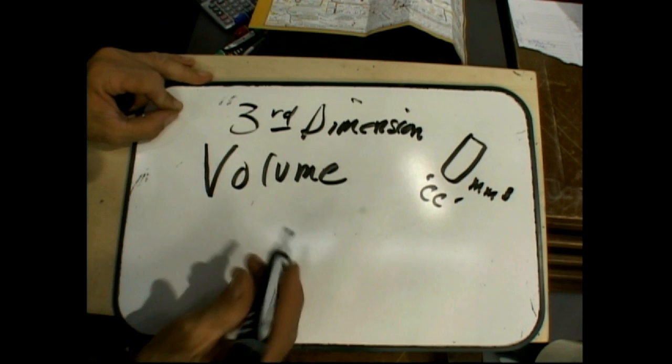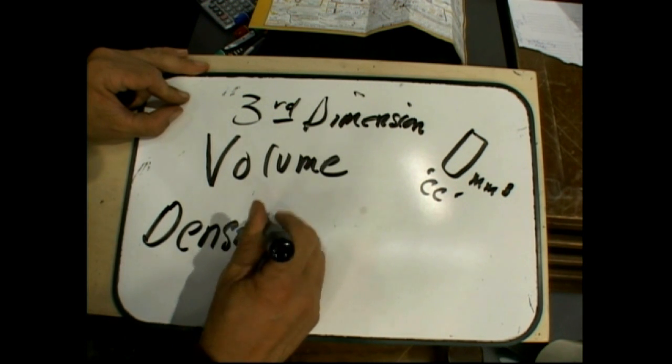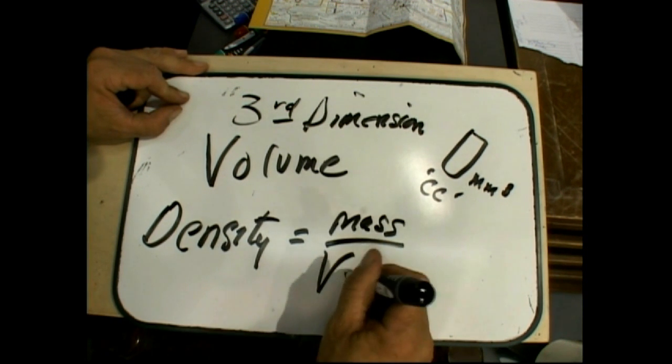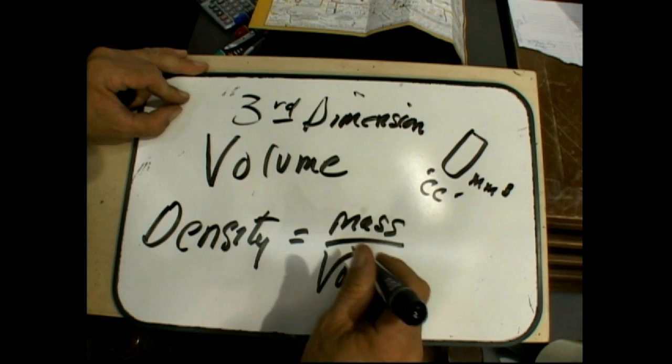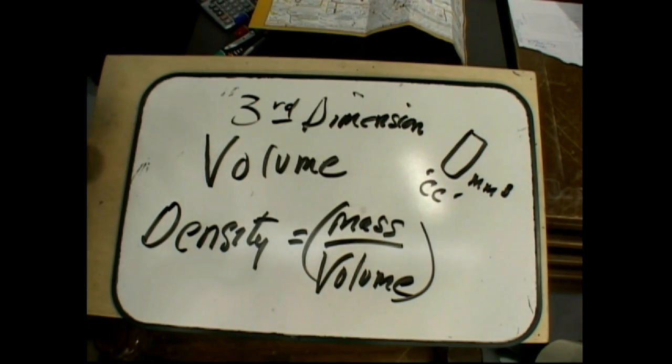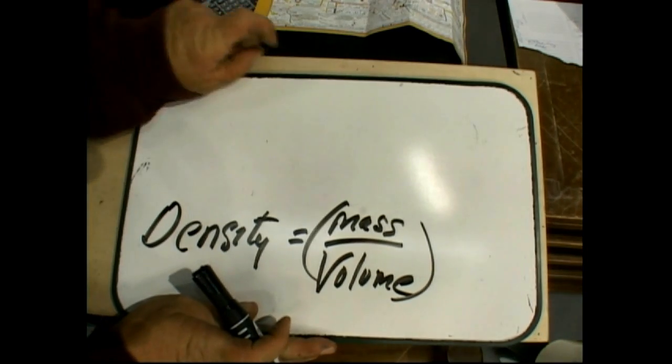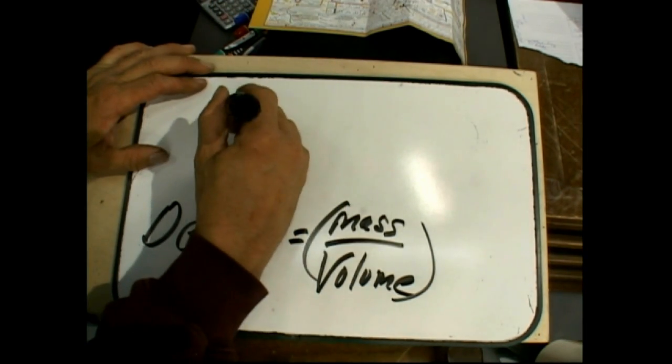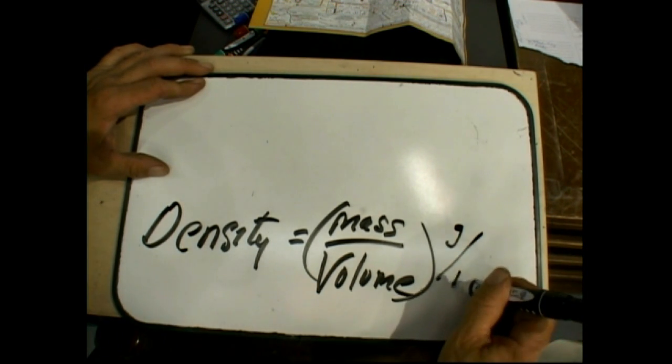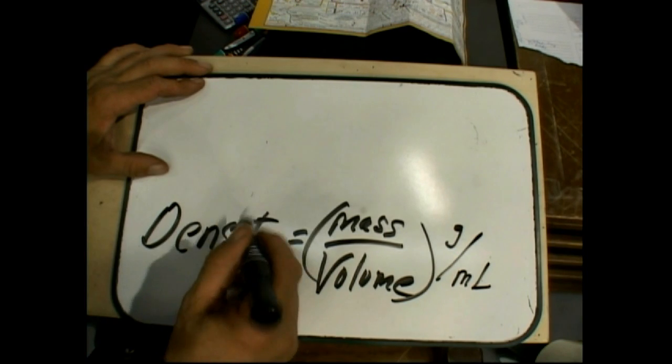Now what they like to use this for is density. Density is the mass over volume. Mass over volume. So this really comes in handy when you're looking at units now. So say the density of something is, what's mass going to be? Mass is going to be grams. Volume, they'll actually call it a milliliter.